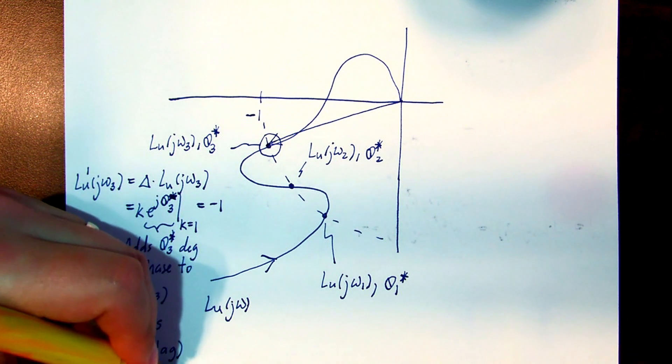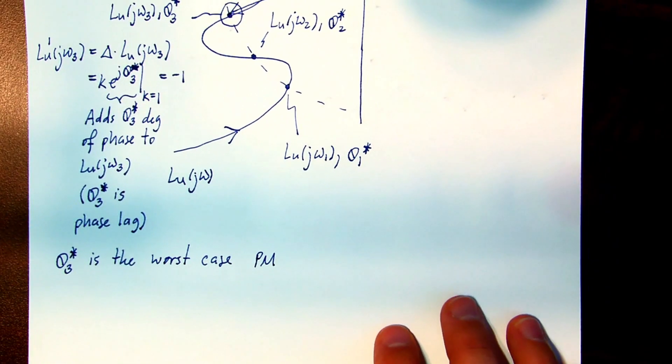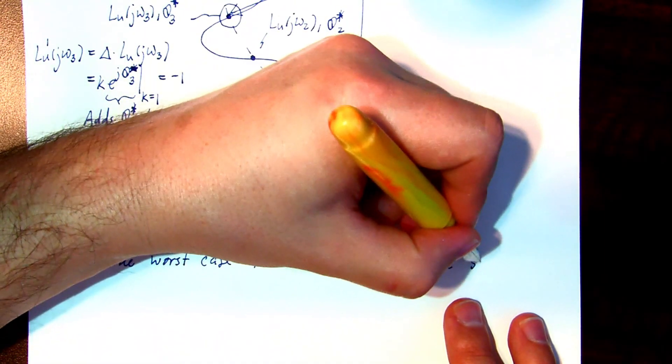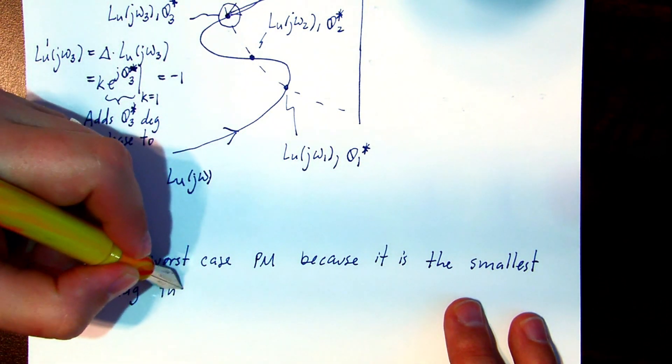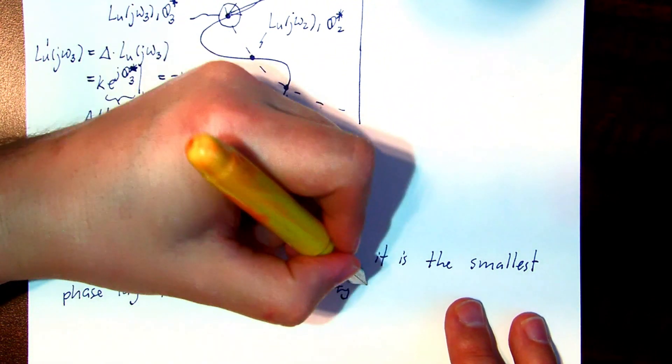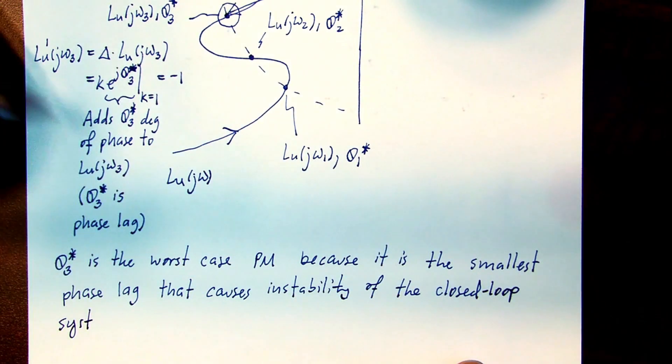The phase margin of importance, or the worst case margin, is that closest to the critical point. It represents the smallest amount of delay, or the smallest amount of phase lag, to bring the closed loop system to the point of instability, or to make the closed loop system marginally unstable.